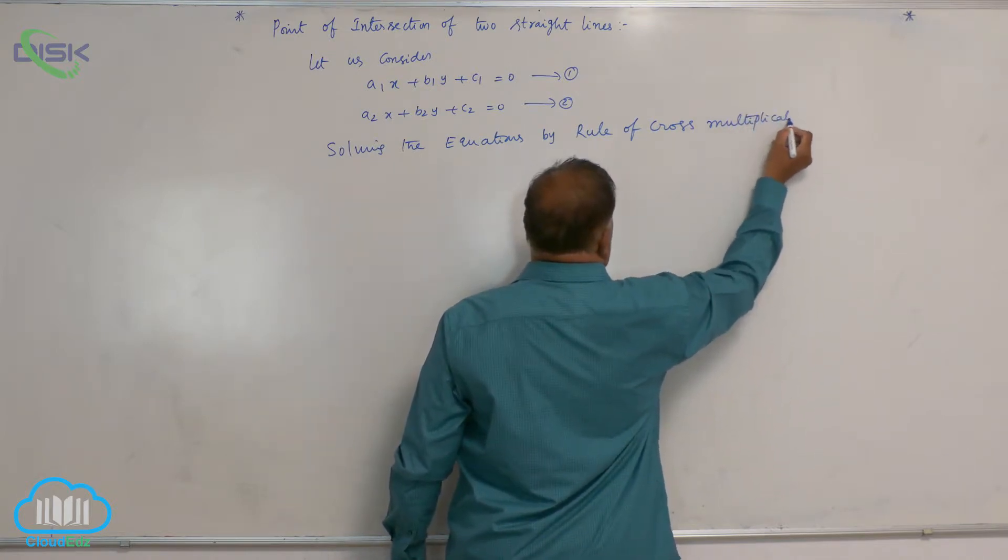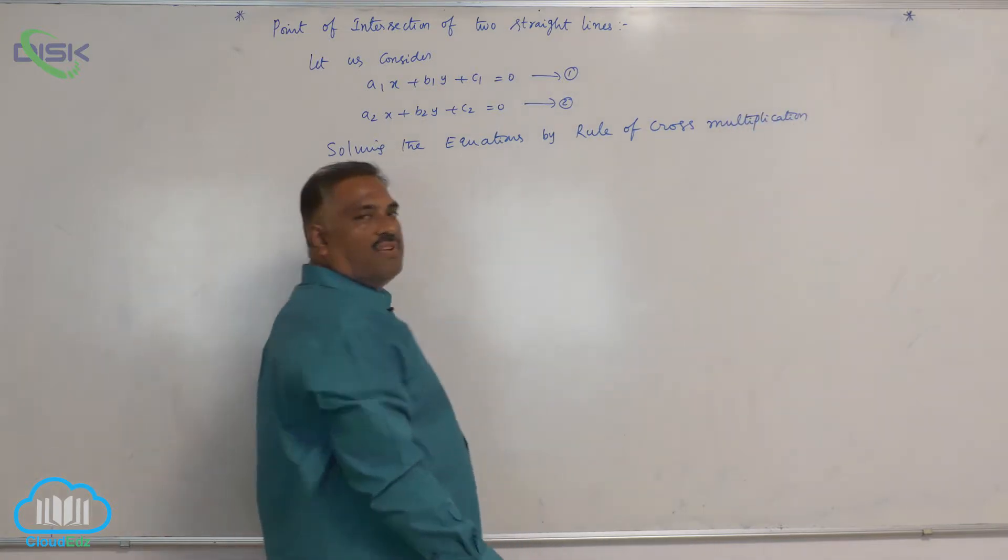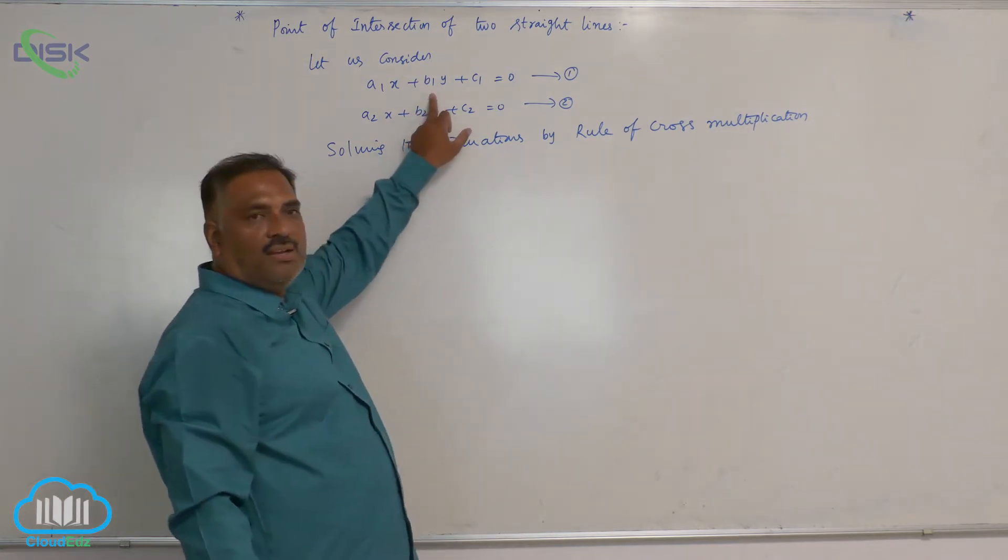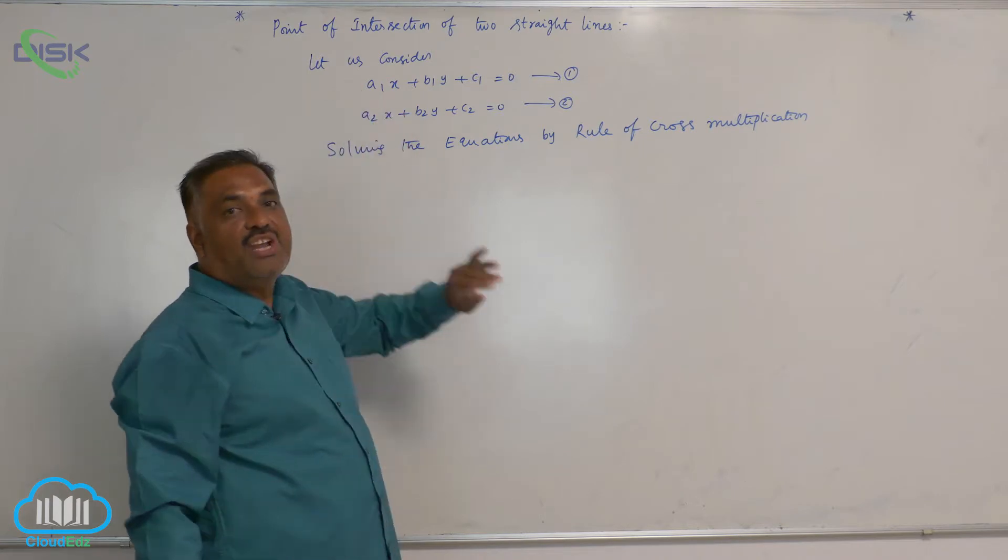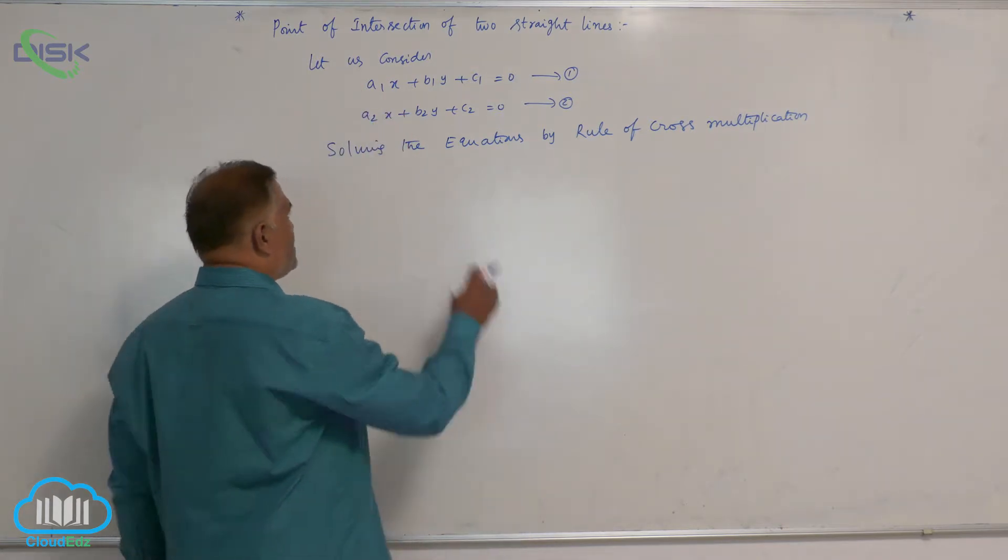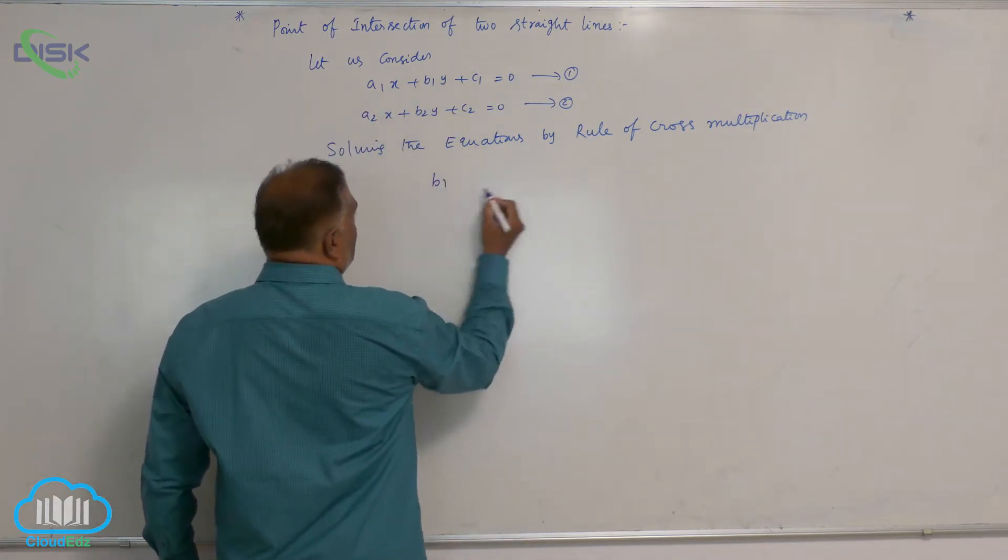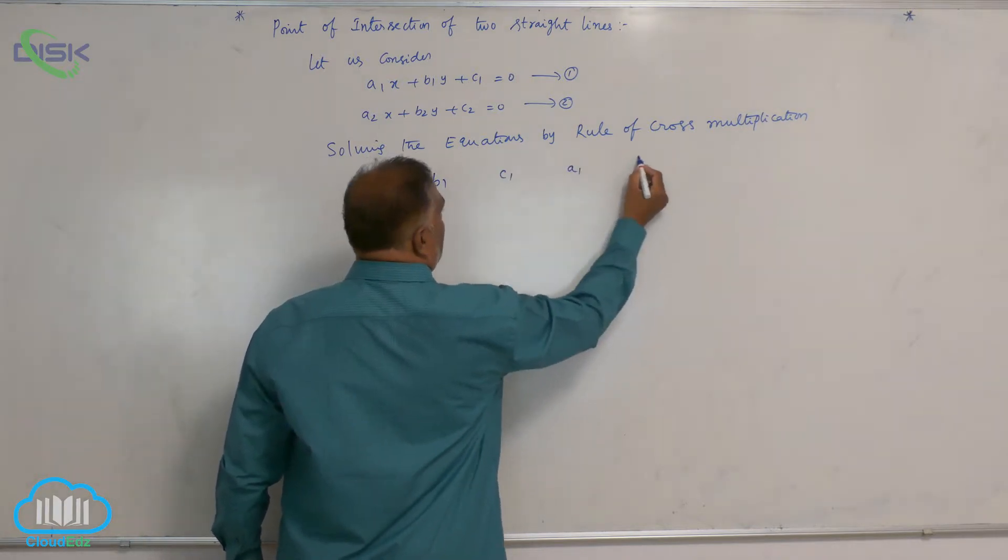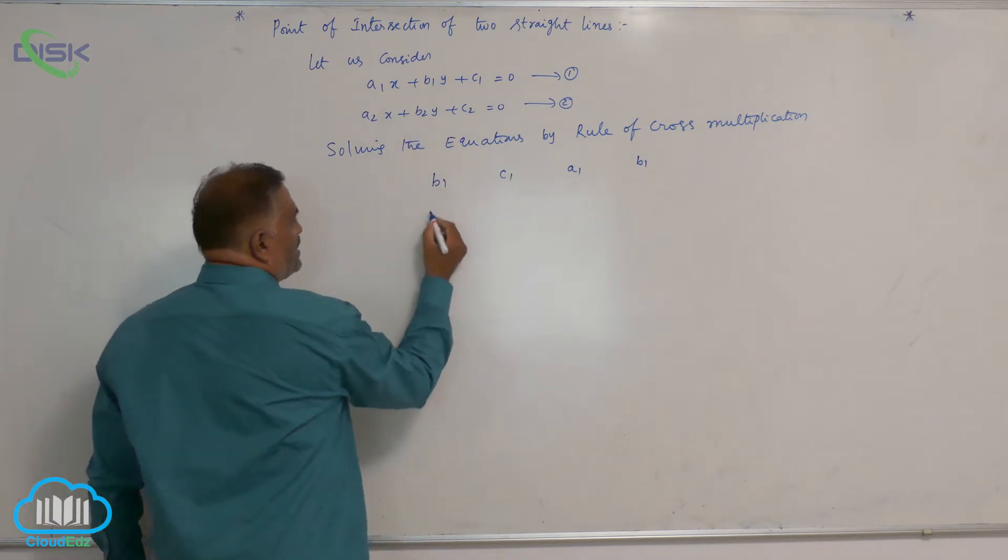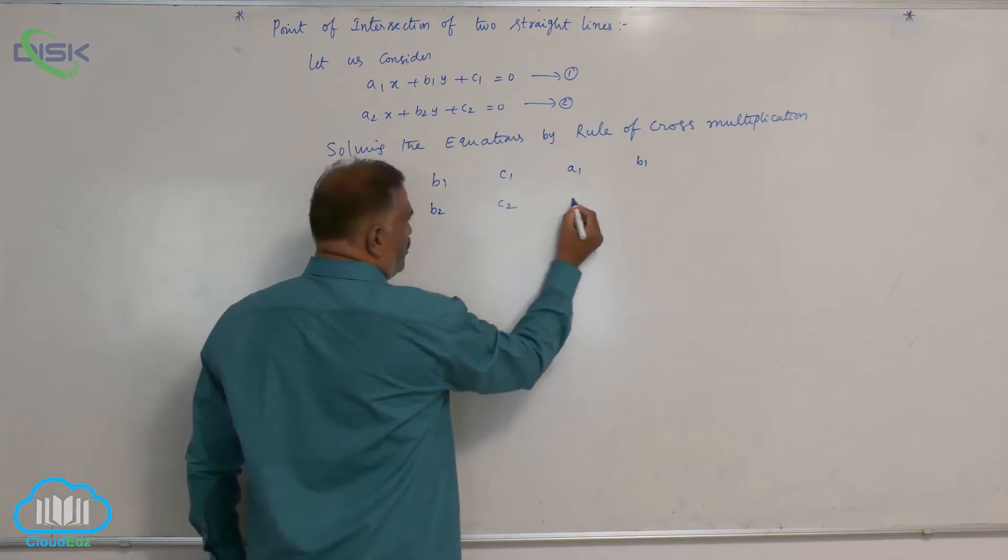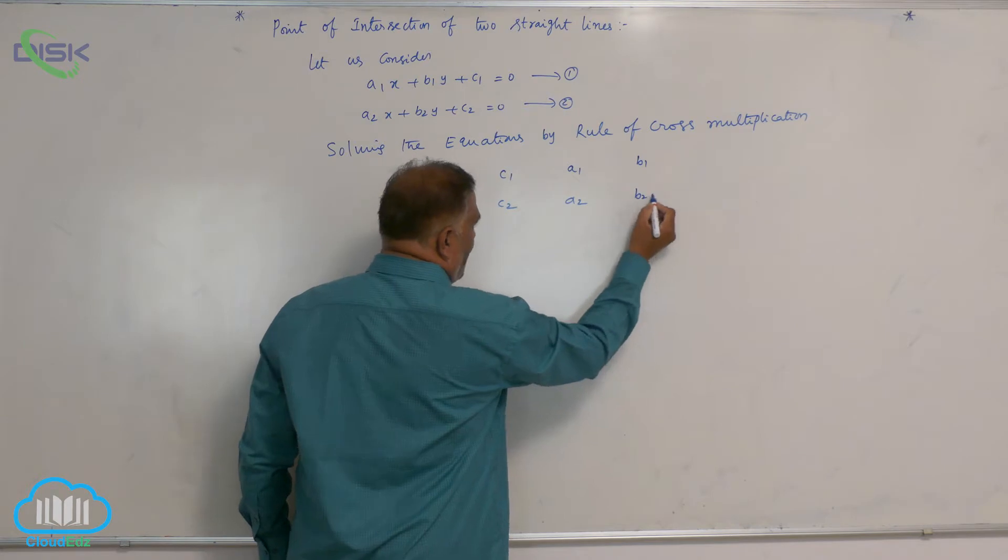You can check once again, you have to start with the coefficient of y, then go to the constant, come back to x, end with y coefficient. That is b1, c1, a1, b1. In the second straight line also, it is b2, c2, a2, again b2.